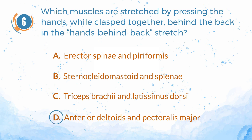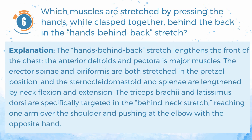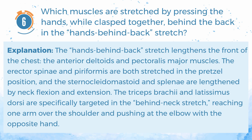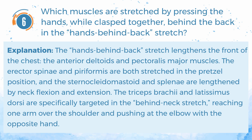The correct answer is D: anterior deltoids and pectoralis major. The hands-behind-back stretch lengthens the front of the chest — the anterior deltoids and pectoralis major muscles. The erector spinae and piriformis are both stretched in the pretzel position, and the sternocleidomastoid and splenius are lengthened by neck flexion and extension. The triceps brachii and latissimus dorsi are targeted in the behind-neck stretch.